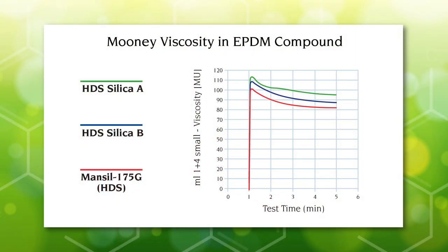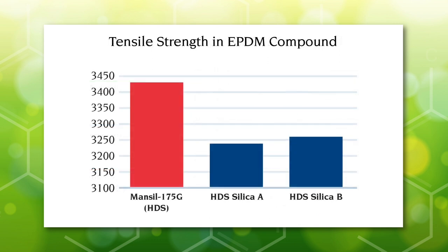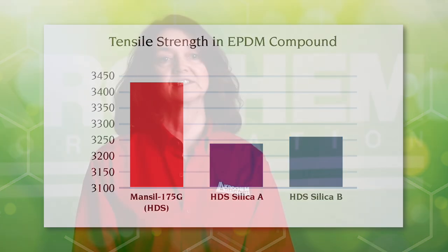This Mooney graph shows compound viscosity comparison between Mansil 175G HDS as well as two competitive HDS silicas. At the same time, high dispersion silica improves physical properties. The following chart shows tensile strength comparison between Mansil 175G HDS as well as two competitive HDS silicas. Even more important than the slightly improved physicals is the more overall consistency in properties. Factory mixed traditional silica formulas tend to have scattered tensile and tear properties due to dispersion variation. The excellent dispersibility of Mansil HDS silica results in more consistency of physical properties.